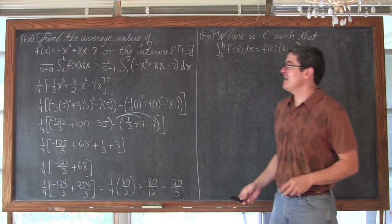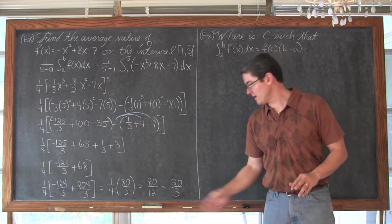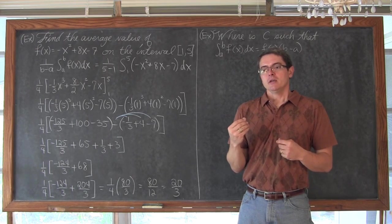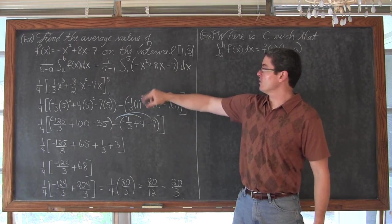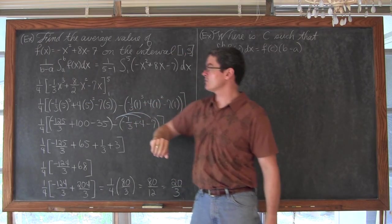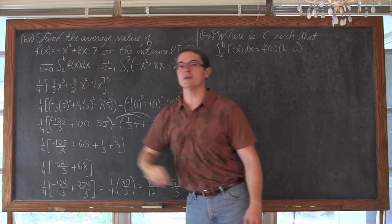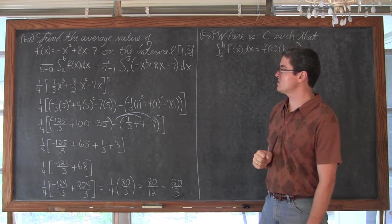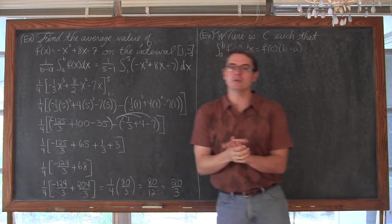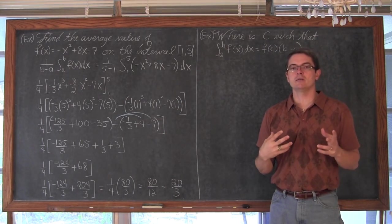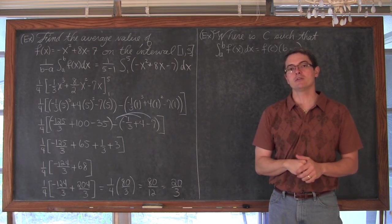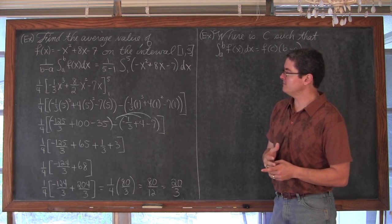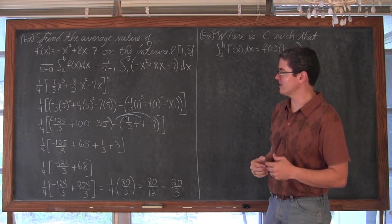I hope this is what you got. The average value of the function on the closed interval of 1 to 5 came out to be 20 over 3. How did we get there? Well, we went through the indefinite integration process and used the power rule. We took this power of 2, increased it by 1, and divided by 3. I just pulled that negative 1, and the division of 3 out as a fraction, negative 1 third. I took that exponent of 1, and increased it by 1, and divided it. So, we have that 8 divided by 2, and then finally our negative 7x. Remember, we don't need to write the plus c that we get from indefinite integration, because as we go through the first fundamental theorem of calculus and find this definite integral, they are going to cancel out anyway.